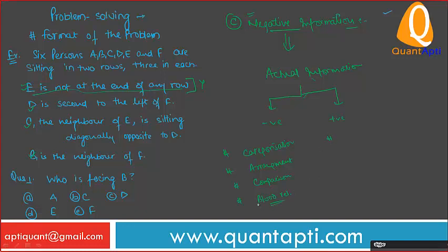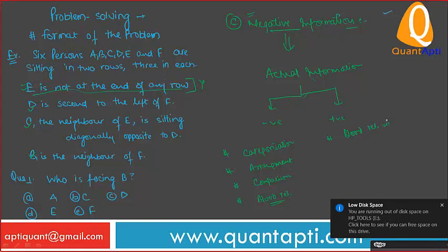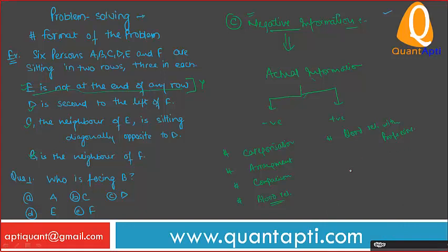Blood relation problems come in two types: simple ones like 'A is the mother of B, C is the father of D — what is the relation between them?' and problem-solving blood relations where you have multiple pieces of information and 5 to 6 questions are asked. After that comes blood relation with profession — where A is the father of B and also a doctor. Then conditional problems where mathematical or other conditions are given. These are the six types of problems we will cover.